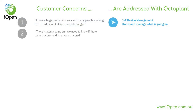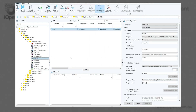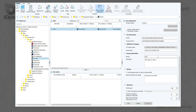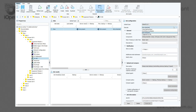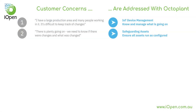Secondly, there is a lot going on and customers need to know if there were changes made and what changed. With multiple people making multiple program changes, it's difficult to keep track. OctoPlant provides the capability of safeguarding your assets, which helps you ensure that all assets run as configured. You have the ability to create a job — a task whereby OctoPlant will connect to the OT device, create a backup and check that the intended configuration is what's actually running. Jobs can be configured to execute automatically or in a variety of ways. You can stay informed by setting up a ruling that defines when you'd like to be notified if any online changes are detected.